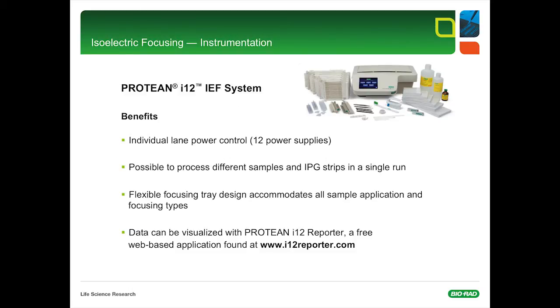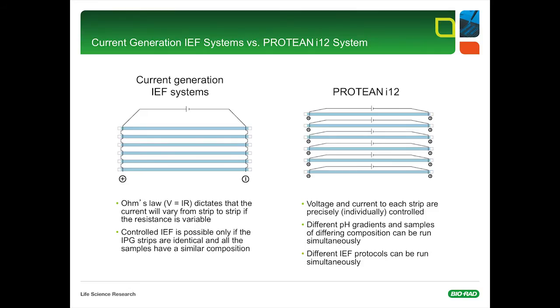This slide is about instrumentation for isoelectric focusing. Bio-Rad's Protean i12 IEF system is really the best instrument on the market because it offers individual lane control. The instrument provides 12 power supplies for 12 strips. Therefore, it's possible to process different samples and different IPG strips in a single run. This is not possible with other instruments. The focusing tray is very flexible and accommodates all sample application focusing types: gel side up, gel side down, and cup loading. Very important is data visualization, which is possible with the Protean i12 Reporter, a free web-based application found at www.i12reporter.com.